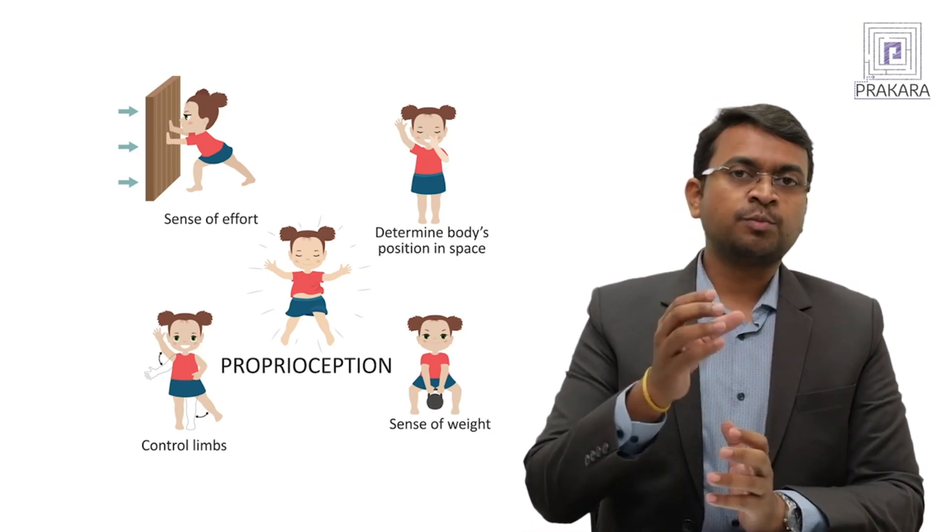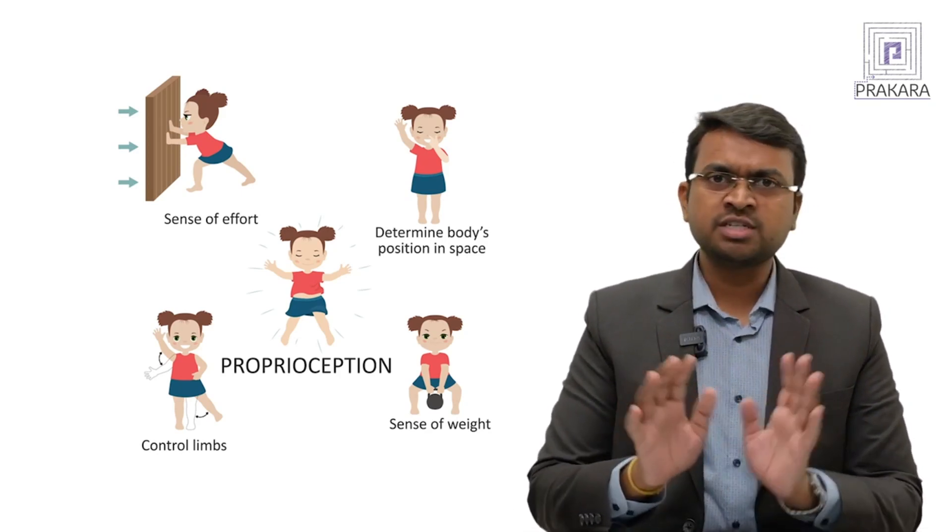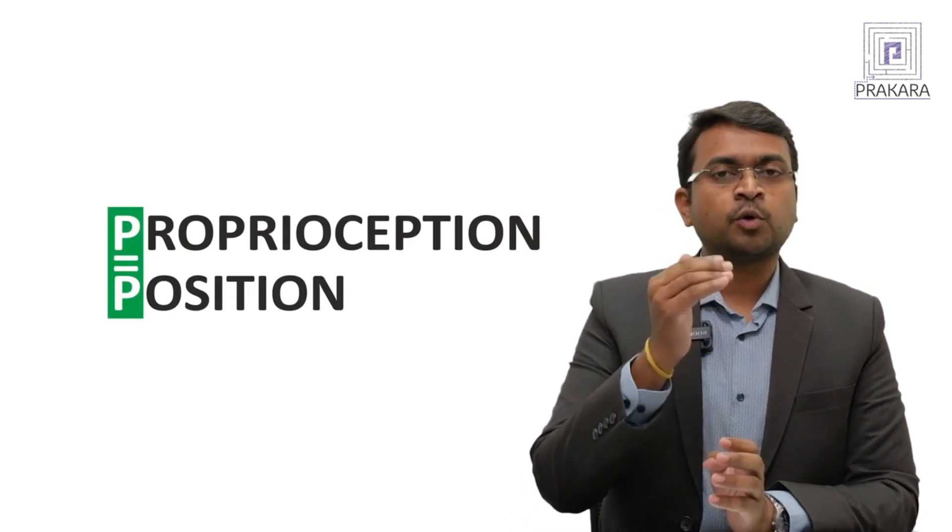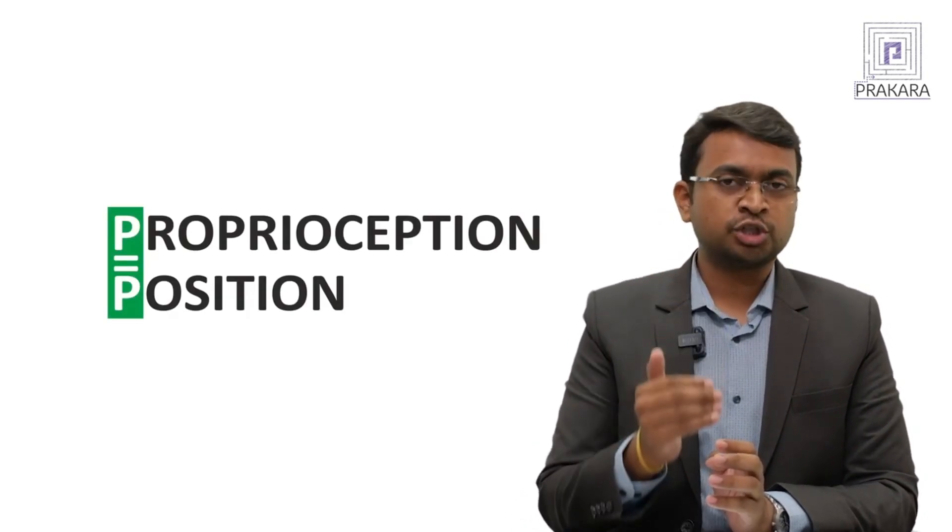Proprioception is a position sense. Don't get confused with too much of my sentences. Just understand: P stands for P. Proprioception is related to position of your body. PP - proprioception, positioning. So just remember it that way.